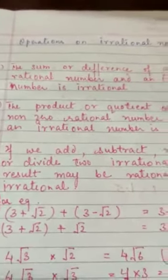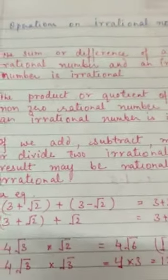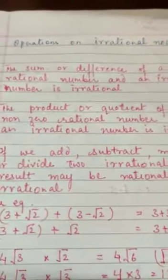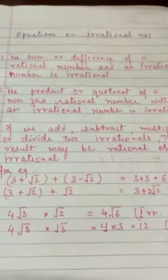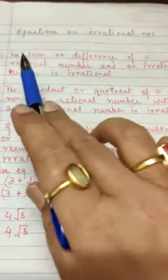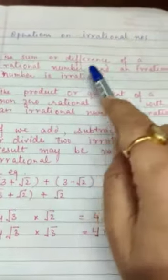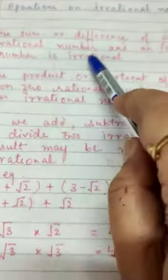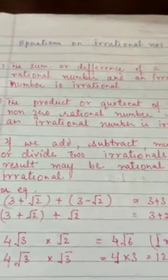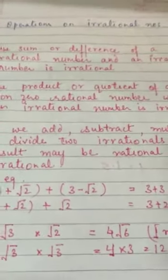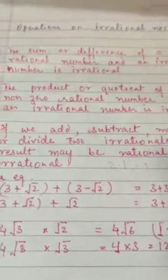Good morning students. Today we will cover Class 9th's next topic: operations on irrational numbers. Here are some points we need to remember. The first: the sum or difference of a rational number and an irrational number is always irrational. For example, 3 plus root 2 is irrational, root 2 minus 5 is irrational.